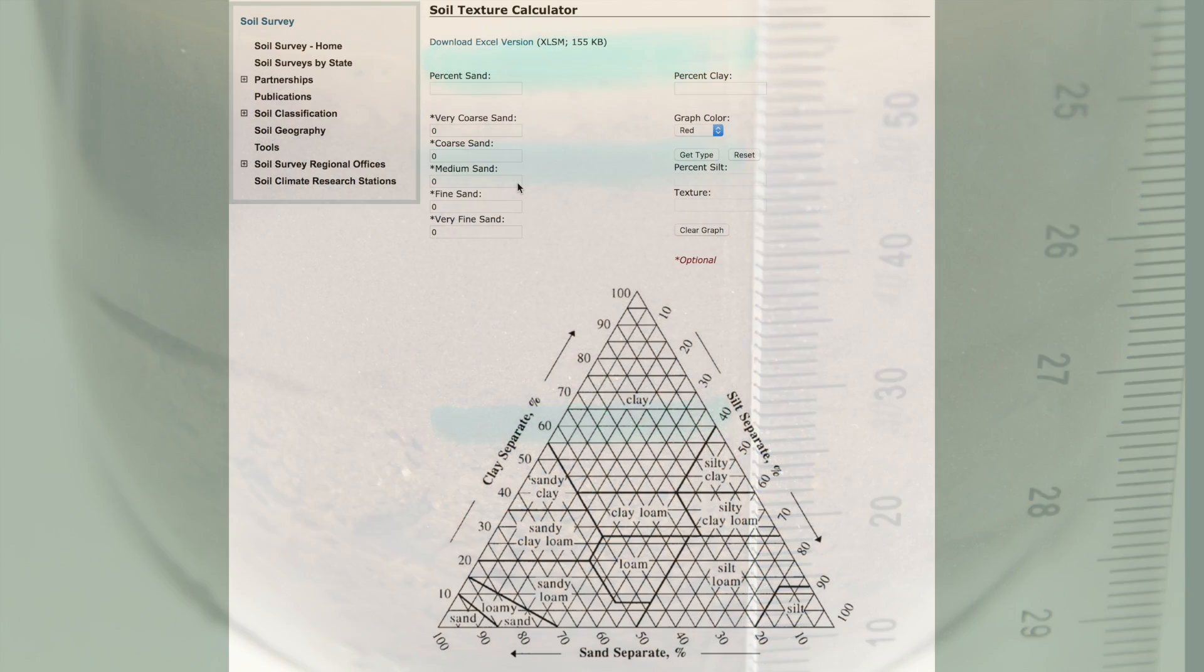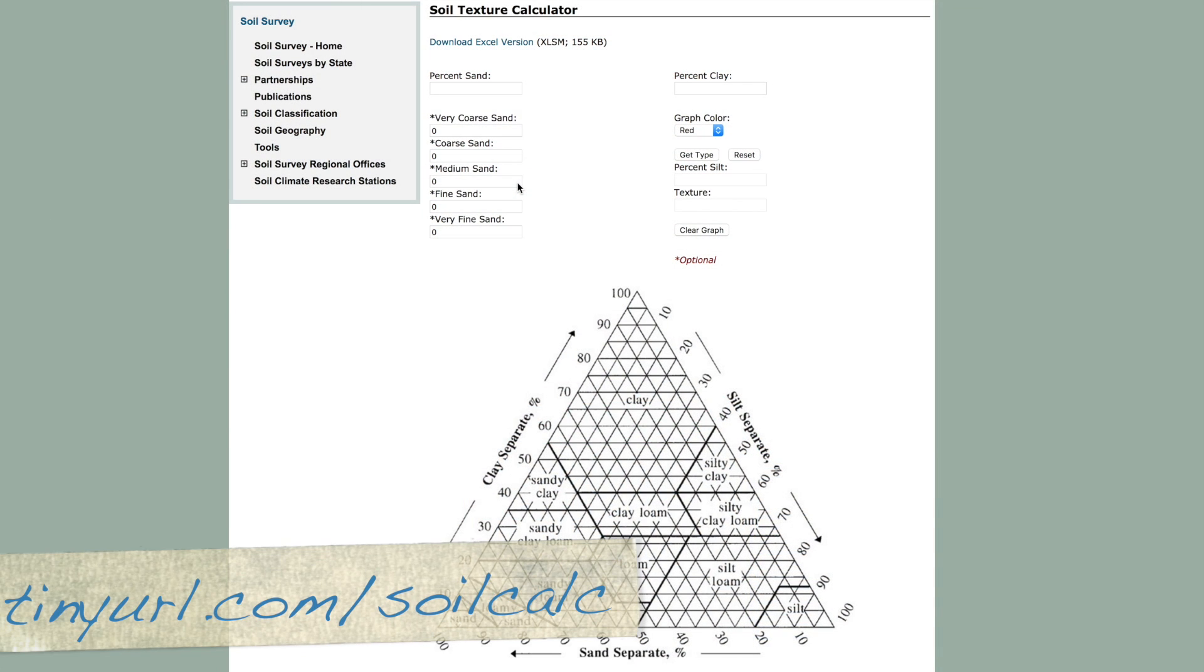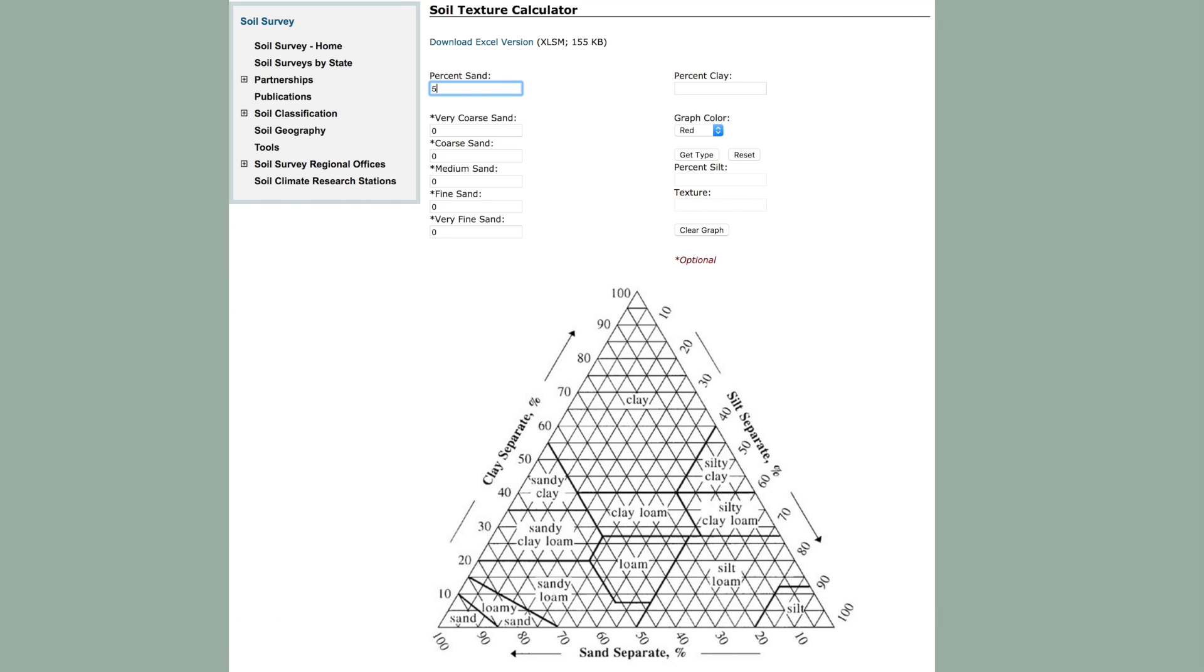We then used a handy tool on the US Department of Agriculture's website to show us what region of the soil texture triangle our soil sat in. We have a borderline loamy soil tending towards being a sandy loam, which is pretty good.